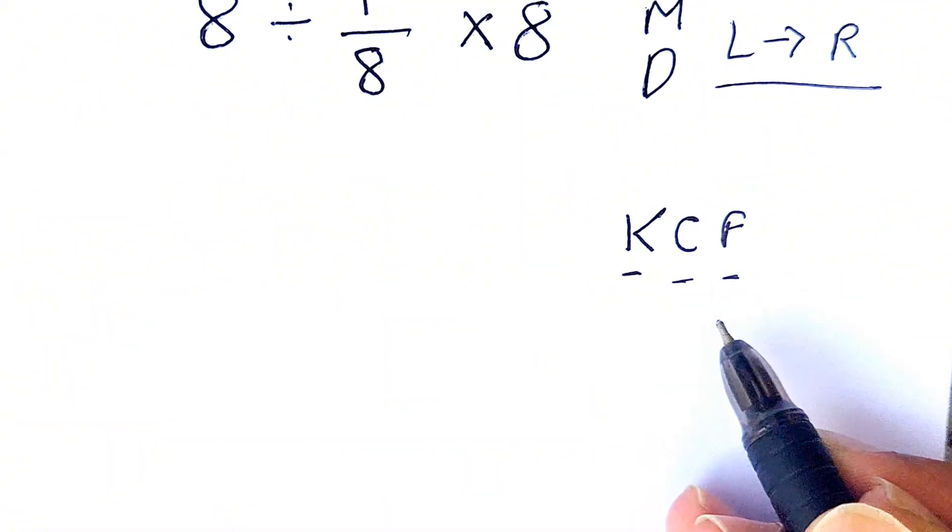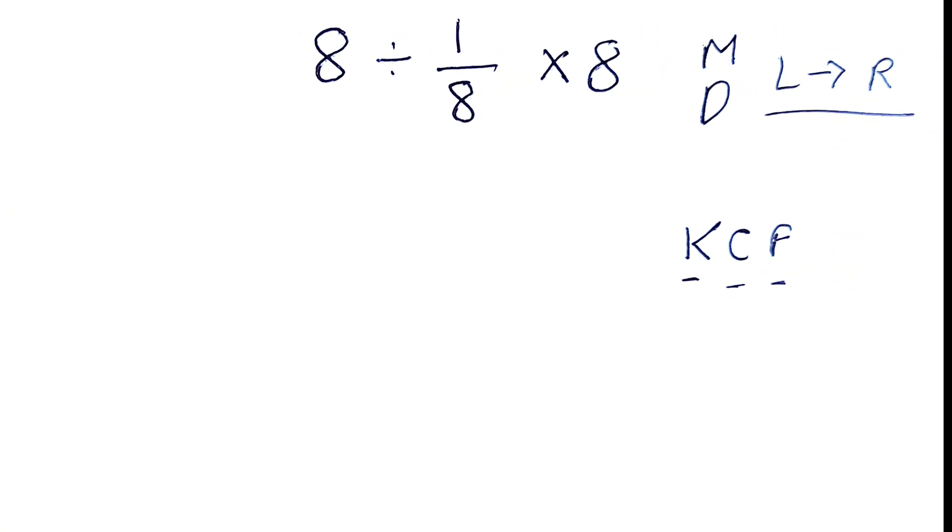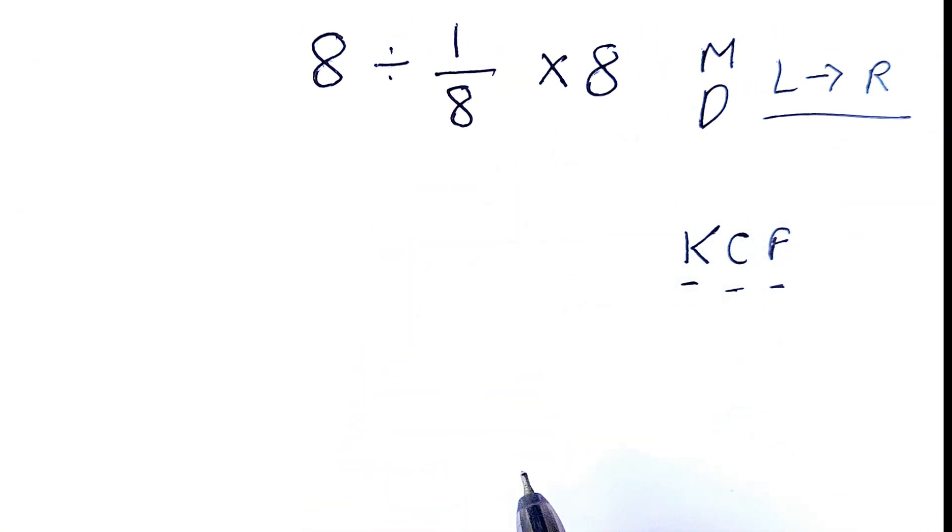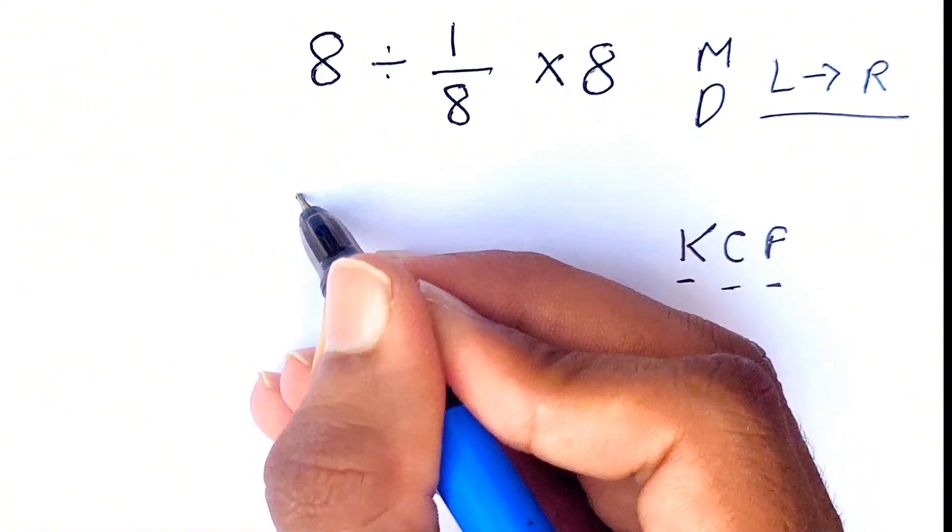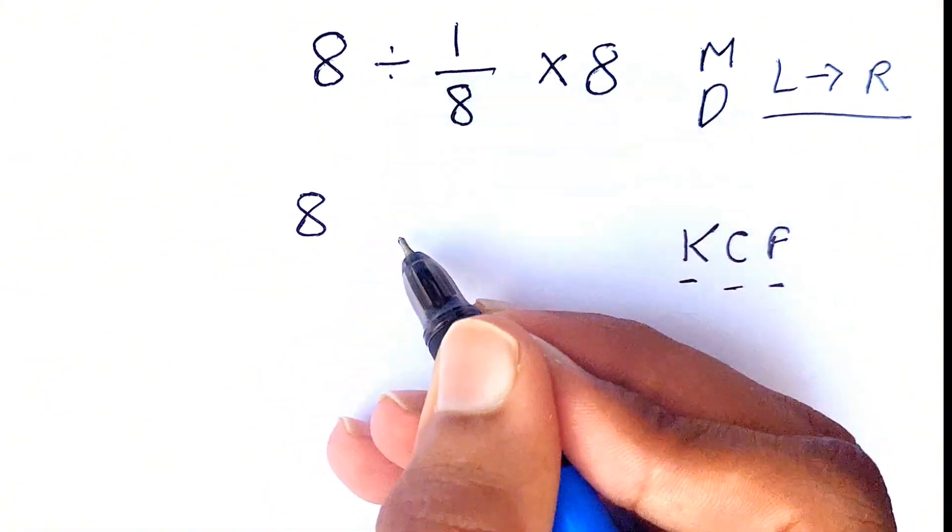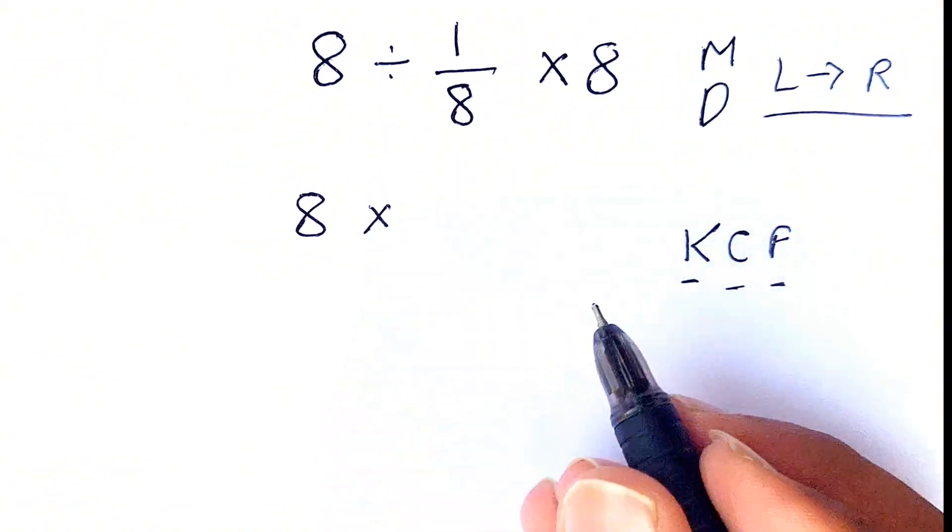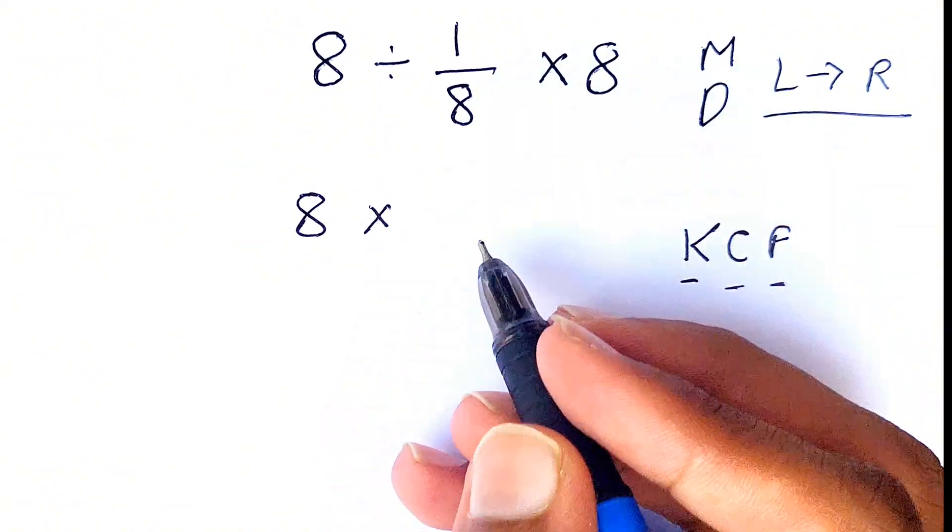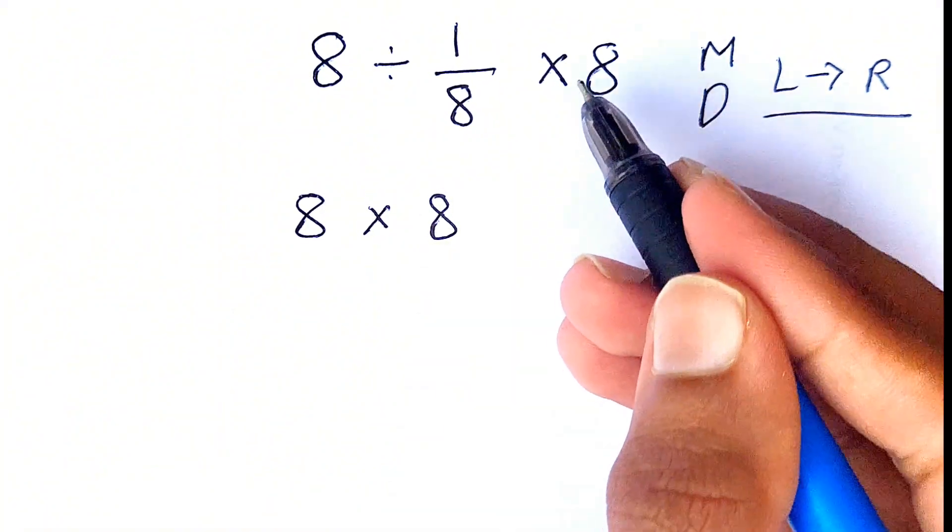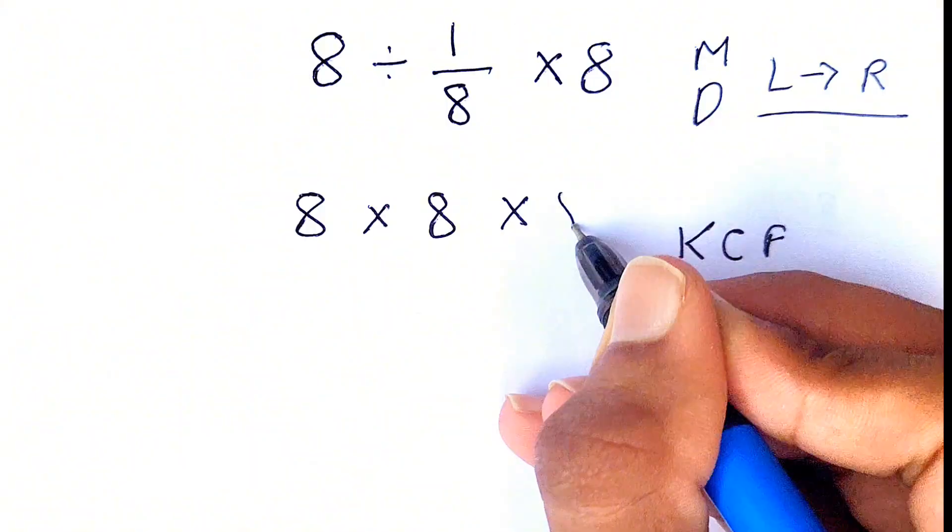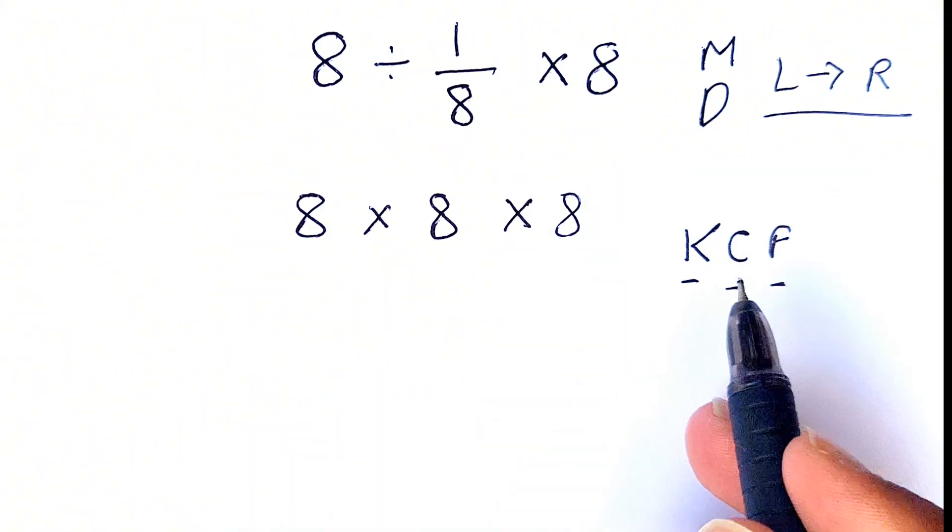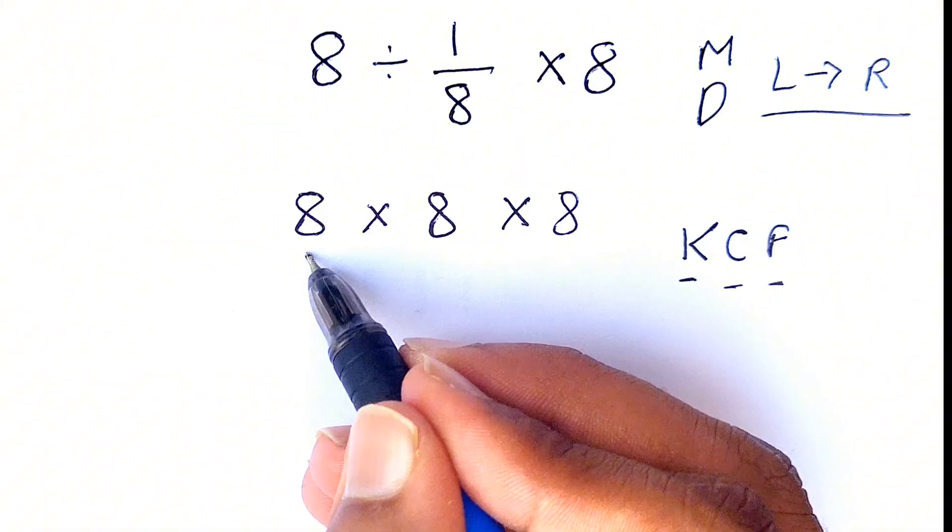So let's try implementing this rule in this expression. As we are going from left to right, we can write this 8 as it is, we need to change the division sign into multiplication, and we need to flip this 1 over 8, which simply gives us 8. Then we can also write this times 8 here, so it is like 8 times 8 times 8.